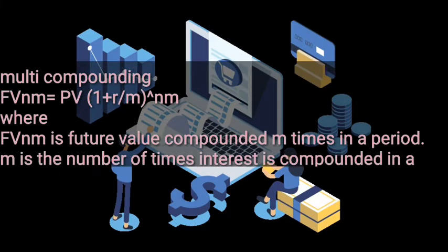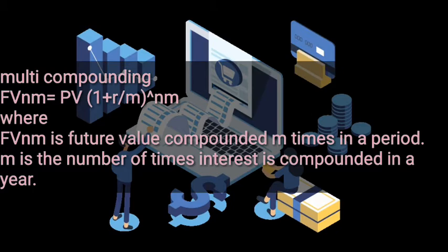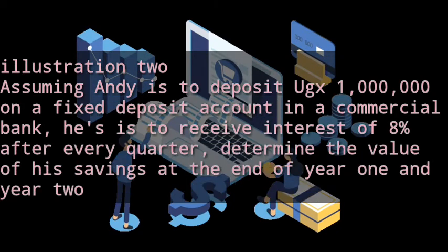The formula for multi-compounding uses the future value of a lump sum. The formula is: Future Value (FV) equals Present Value (PV) multiplied by brackets one plus r over m, raised to the power of n times m. Here, FV is the future value compounded m times in a period, and m is the number of times interest is compounded in a year.